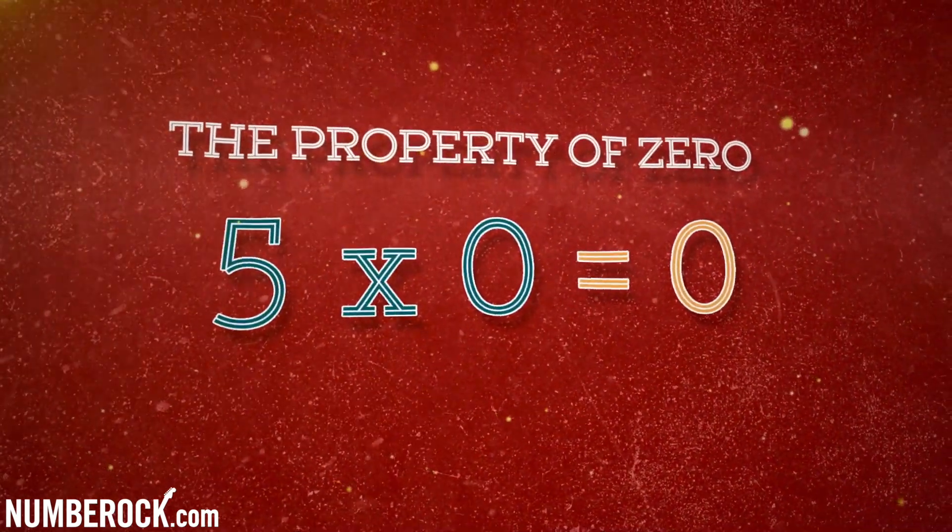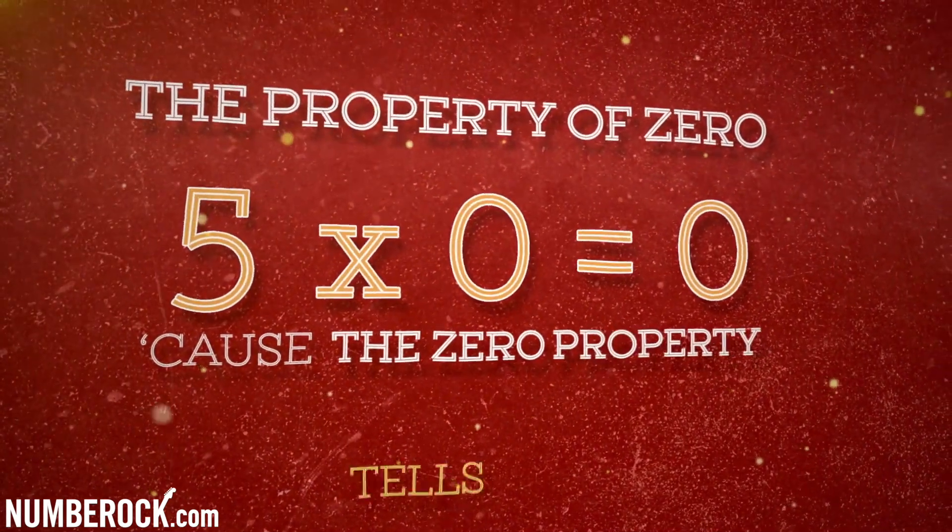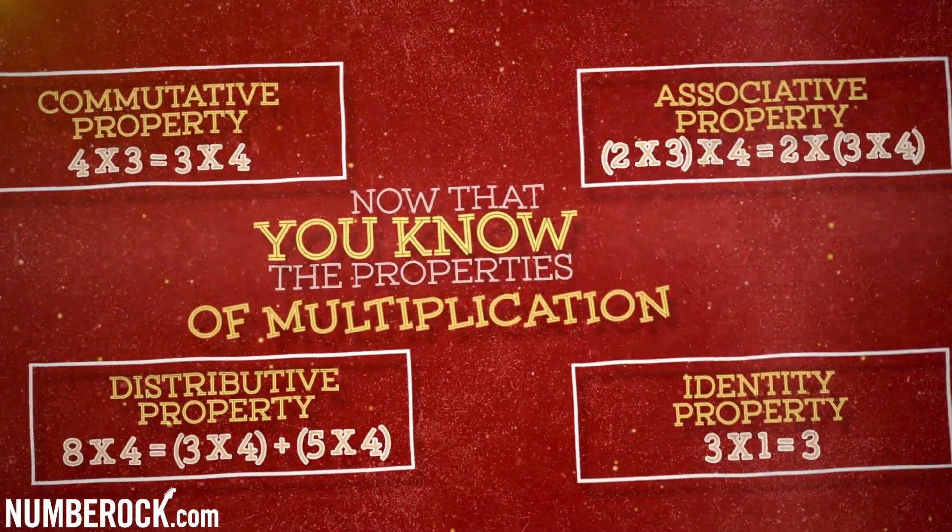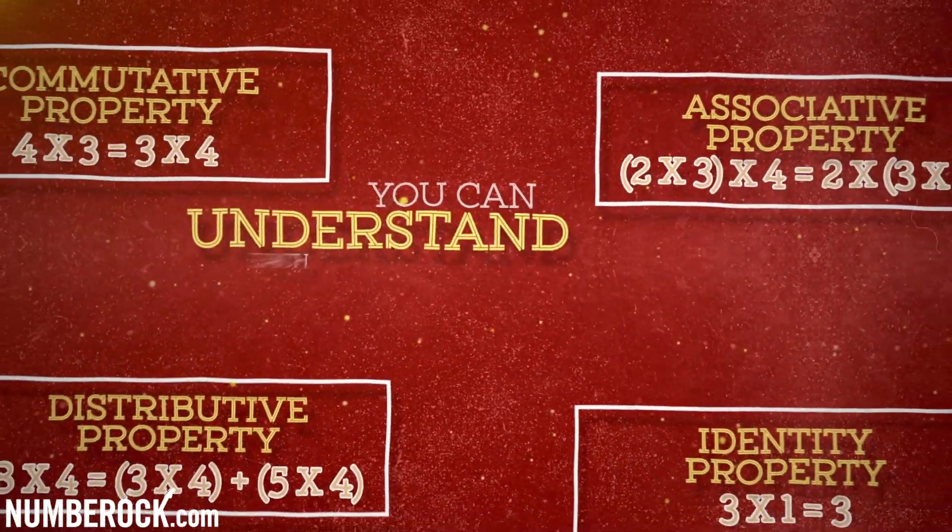For example, five times zero equals zero. Because the zero property tells us so. Now that you know the properties of multiplication, you can understand each of these equations.